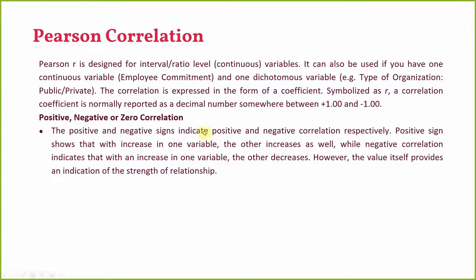The positive and negative signs indicate positive and negative correlation respectively. Positive means an increase in one variable leads to an increase in the other; negative means an increase in one leads to a decrease in the other. For example, servant leadership may decrease conflict — negative correlation. Social responsibility increasing performance would be positive correlation. The value of R itself indicates the strength of relationship; the closer the value is to 1, the higher the strength.